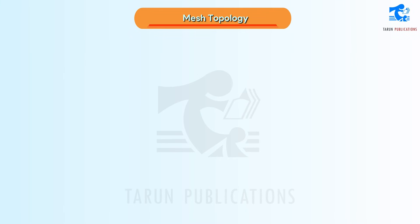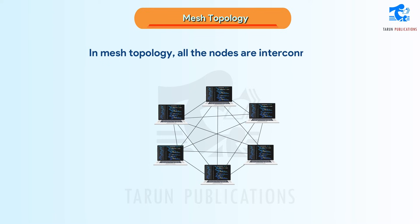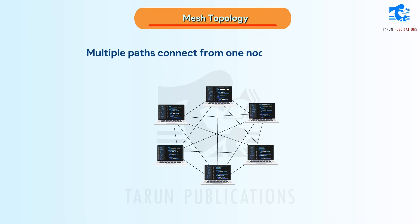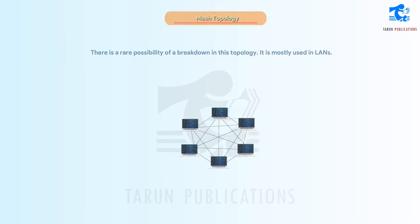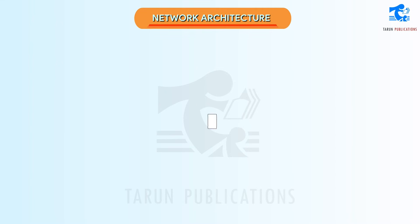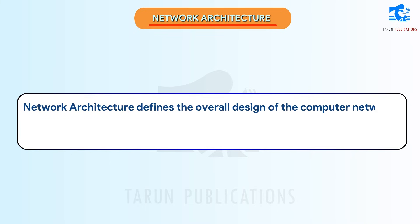In Mesh Topology, all the nodes are interconnected. Multiple paths connect from one node to another node. There is a rare possibility of a breakdown in this topology. It is mostly used in LANs.